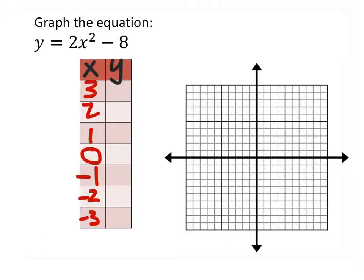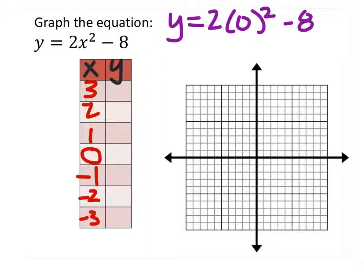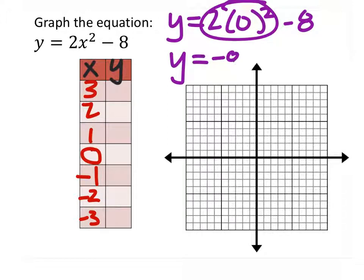For example, when I solve this I have y = 2(0)² - 8. This all just gives us 0, so y = -8. That's our corresponding value of y when x = 0, and that gives us this point right here.